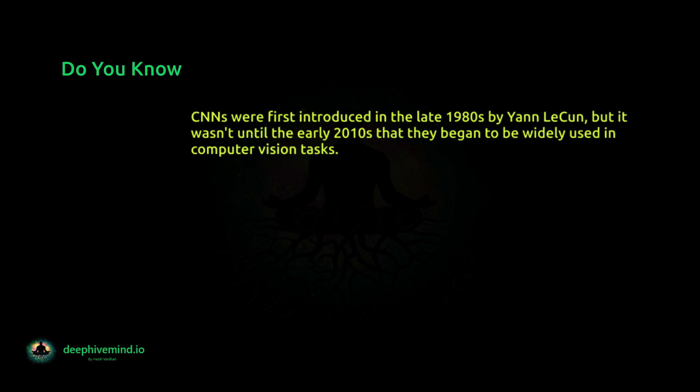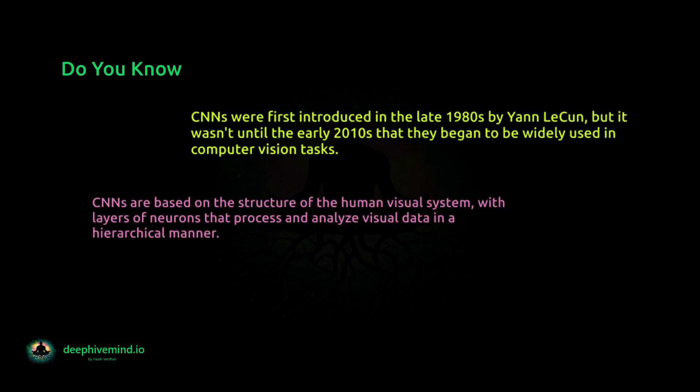Before that, do you know? CNNs were first introduced in the late 1980s by Jan LeCun, but it wasn't until the early 2010s that they began to be widely used in computer vision tasks. CNNs are based on the structure of the human visual system, with layers of neurons that process and analyze visual data in a hierarchical manner.